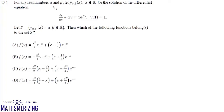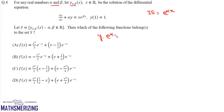For any real numbers alpha and beta, let y(alpha, beta) be the solution of the differential equation dy/dx + alpha·y = x·e^(beta·x). This is linear in y. Finding its integrating factor gives e^(alpha·x), so we can write this as y·e^(alpha·x) equals the integral of x·e^((alpha+beta)x) dx. We consider two separate cases.